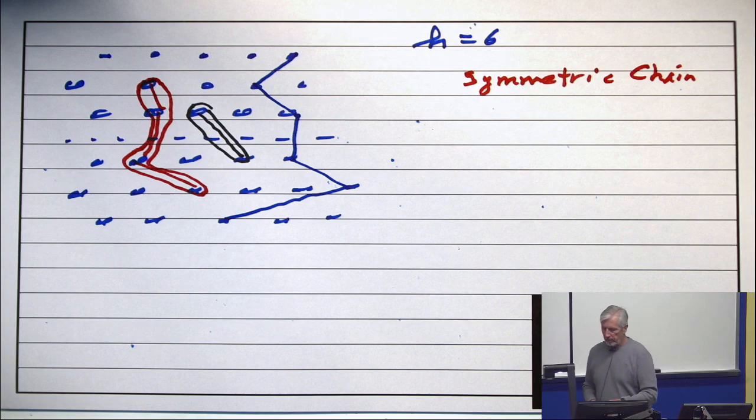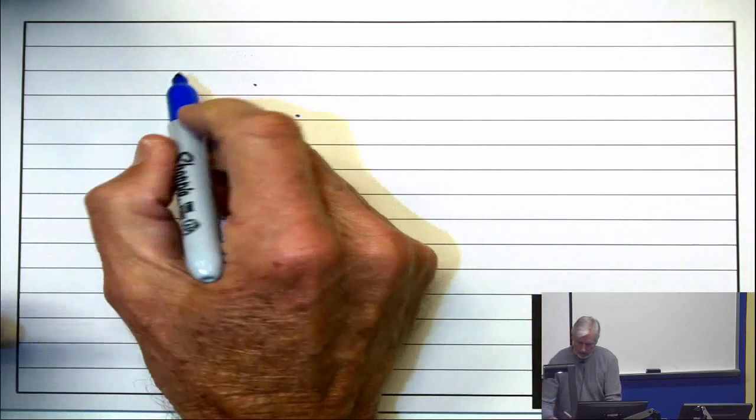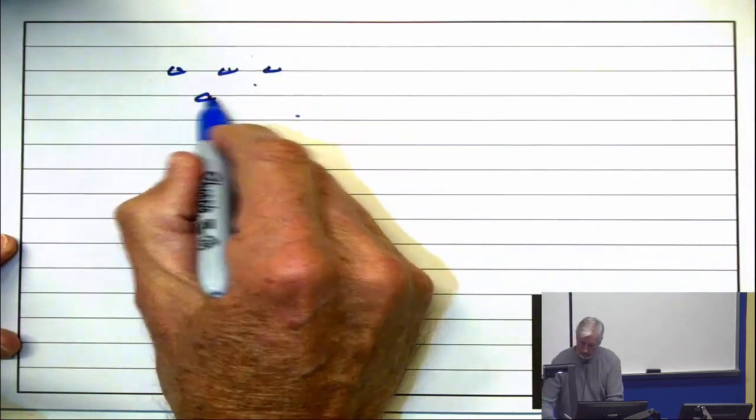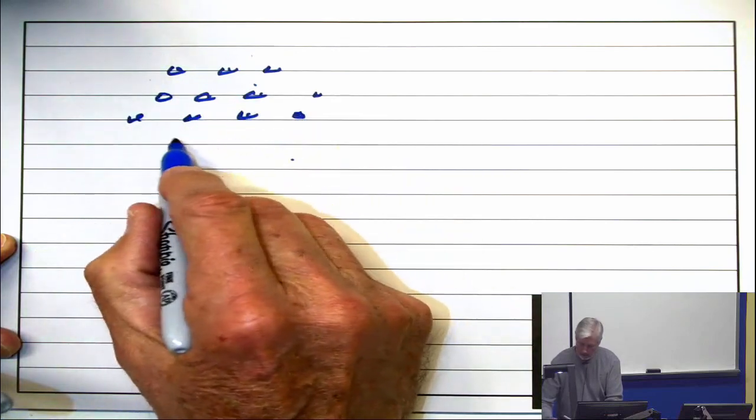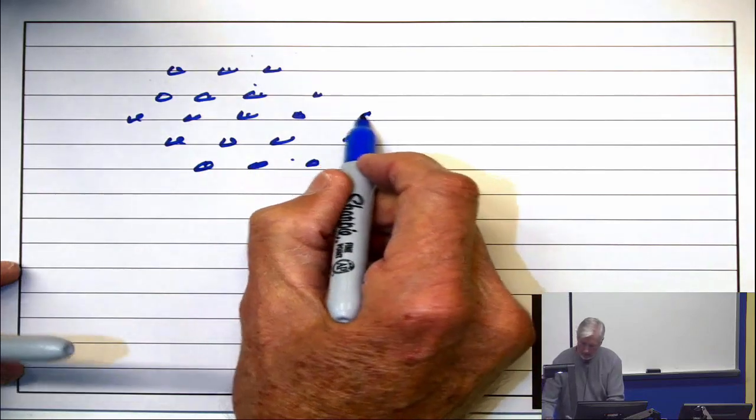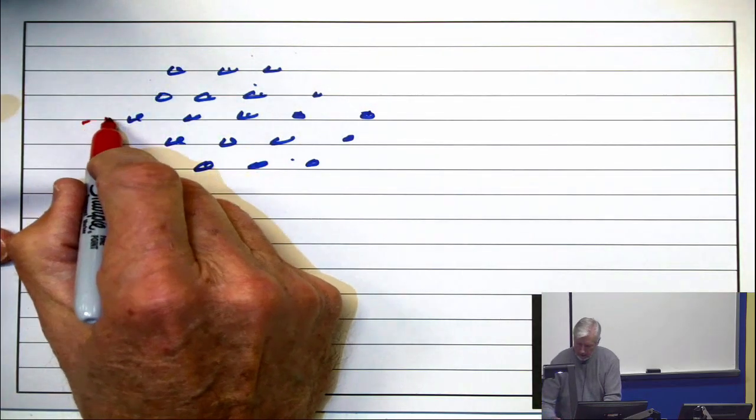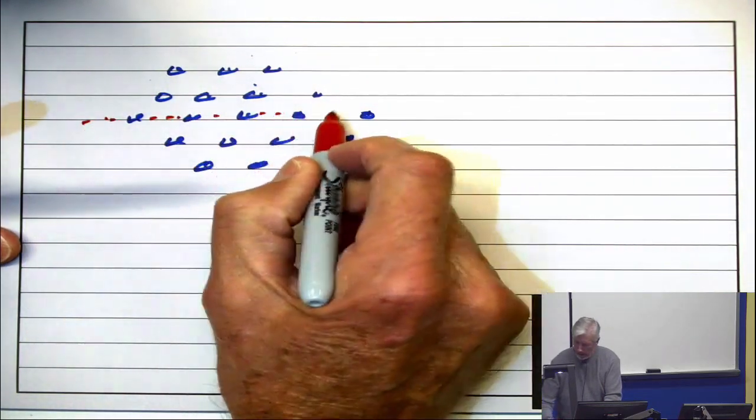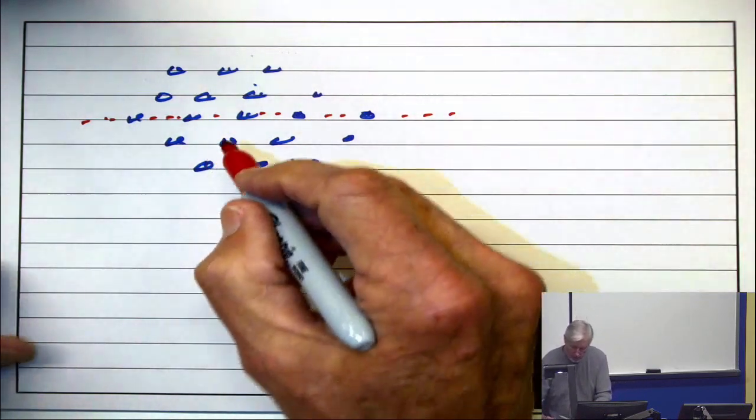Let me point out that when h is odd and the middle goes right through this, symmetric chains look like this.